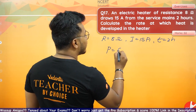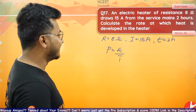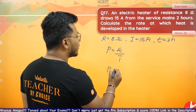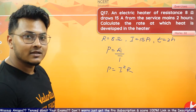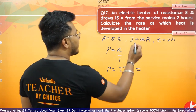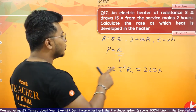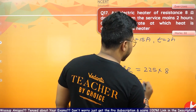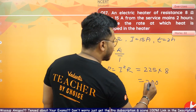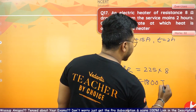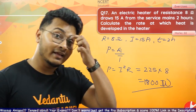Power is equal to energy upon time. The formula to use here is P = I²R. So power = (15)² × 8 = 225 × 8 = 1800 watts. 1800 joules per second is the correct answer.